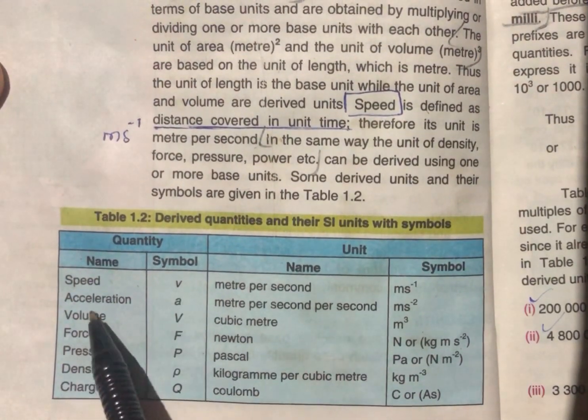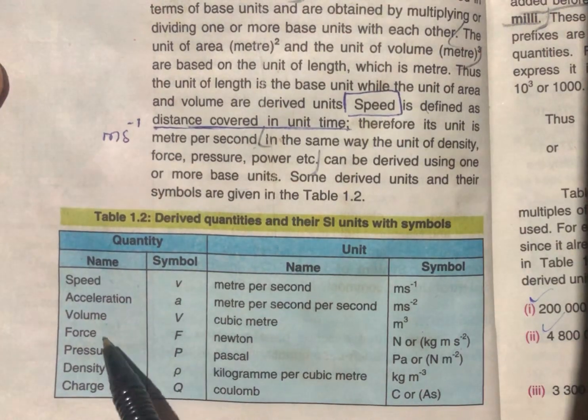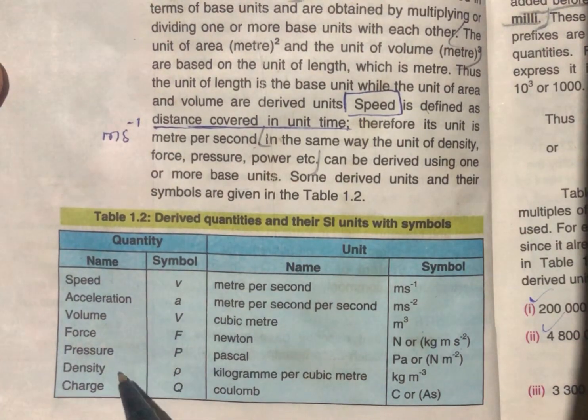So let's see what we have given here: speed V, acceleration A, volume V, force F, pressure P, density.